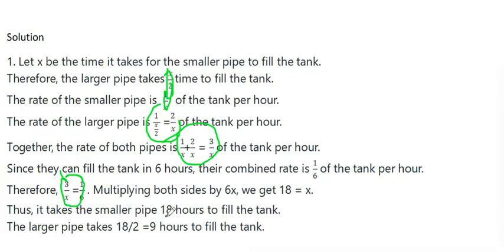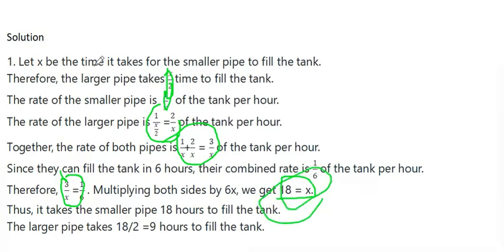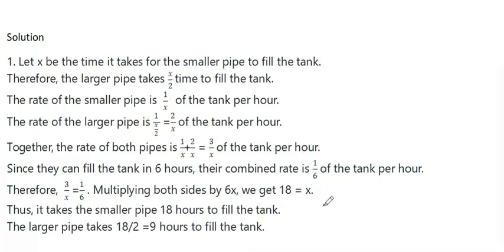To solve, we multiply both sides by 6x. So 3 times 6x gives 18x, and 1 over 6 times 6x gives x. Solving, x equals 18. So the smallest pipe takes 18 hours to fill the tank on its own, and the largest pipe takes 36 hours.